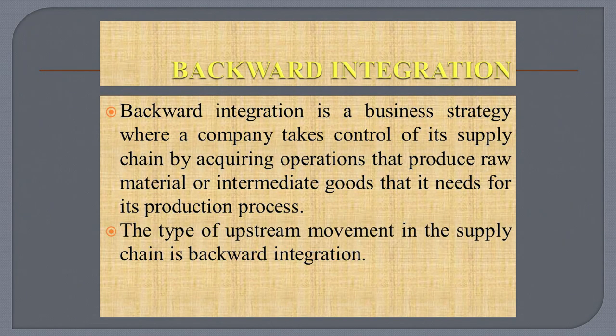The next one is backward integration. Backward integration is a business strategy where a company takes control of its supply chain by acquiring operations that produce raw materials or intermediate goods that it needs for its production process. This type of upstream movement in the supply chain is backward integration. For example, when a popcorn company buys a corn farm, they are acquiring steps in the process required before the product can be sold. This is an example of backward integration — anything needed before a product can be finished is part of backward integration.